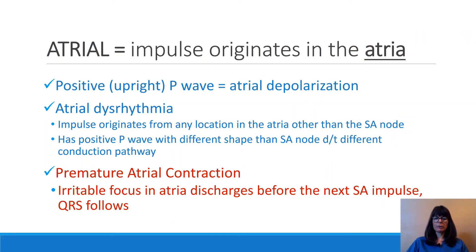So let's look at premature atrial contractions. Whenever there's 'atrial' in the word, that means that the impulse originates in the atria. Atrial depolarization and contraction is represented by the P wave, which is usually upright. In any kind of atrial dysrhythmia, the impulse originates from any location in the atria other than the SA node.